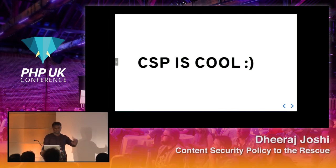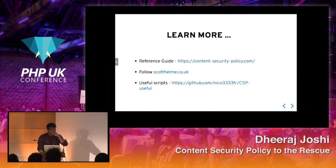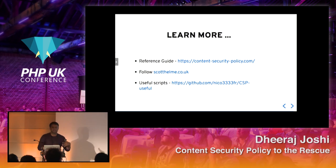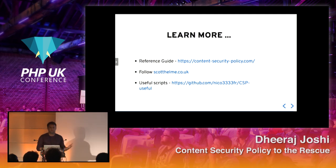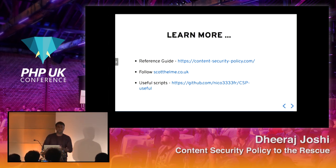CSP is cool. If you want to deploy it without breaking production, use the Content-Security-Policy-Report-Only header. If you want to learn more, there's a reference guide at contentsecuritypolicy.com. Follow Scott — he was the one who identified all those websites infected with cryptojacking last week, including government websites. There's also a useful script at that URL. I'm also going to publish a handbook which I was working on.